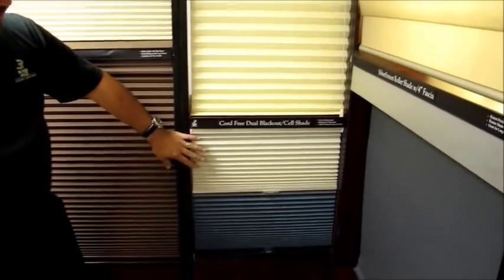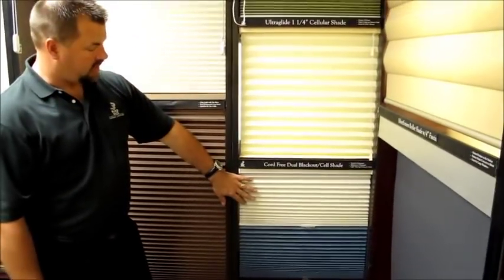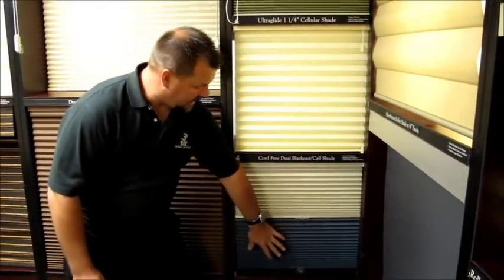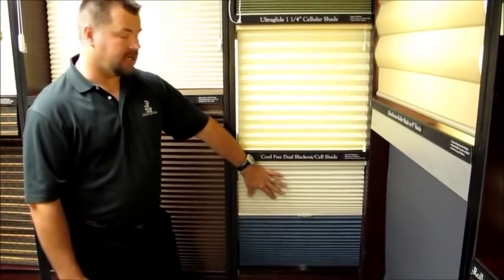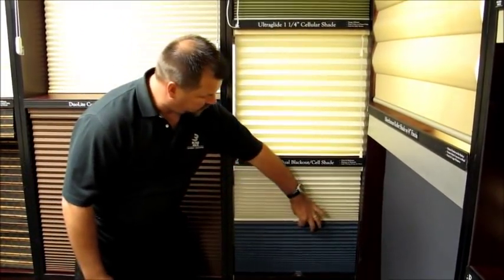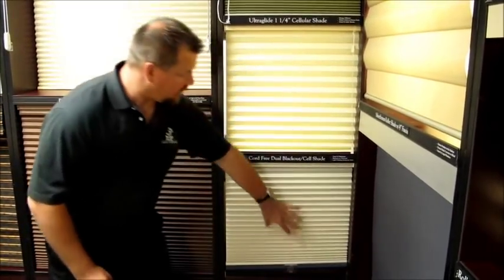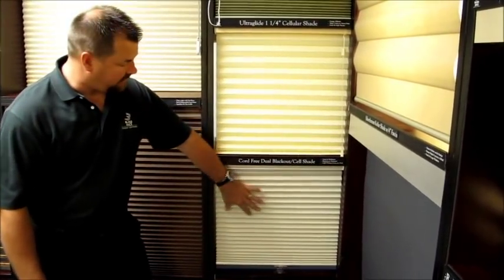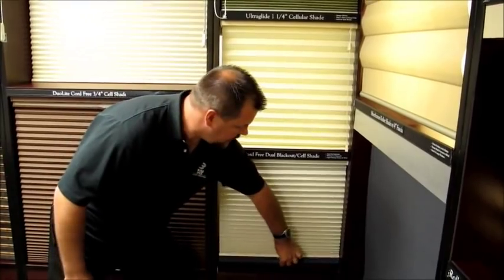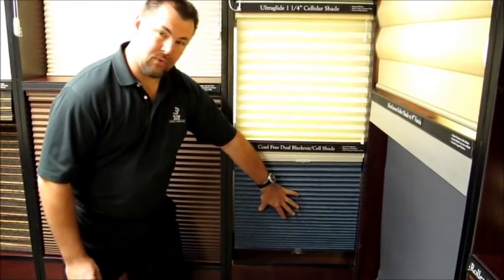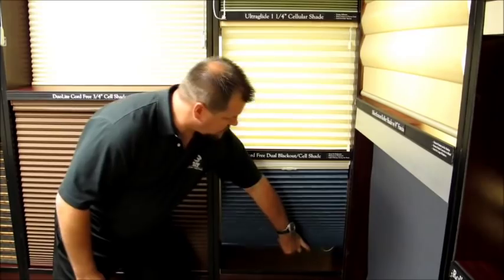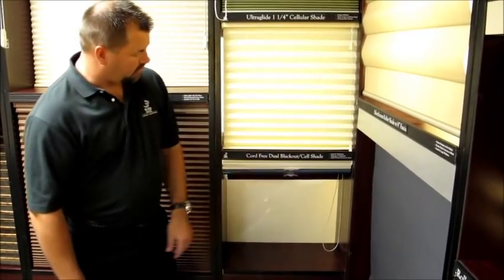Below this, we have a cord-free day-night shade. This gives you the ability to have blackout and privacy on the same shade. And with the cord-free option, you literally can just slide it with your fingers. In this model here, you can see that we have the light filtering privacy on the top, and then when you want to have the room darkening effect, you can raise the lower shade. If you'd like to see out of the window, you just raise both of them.